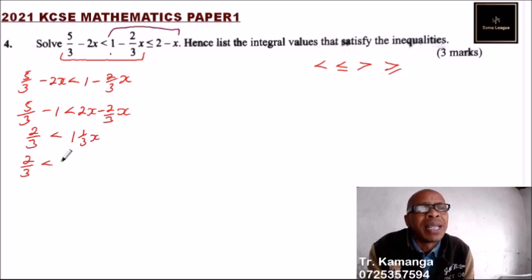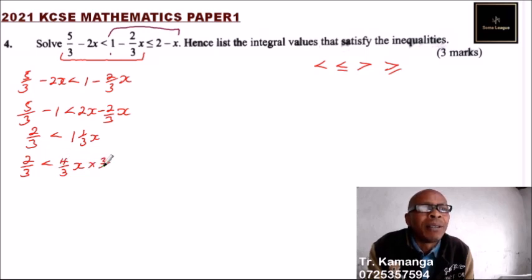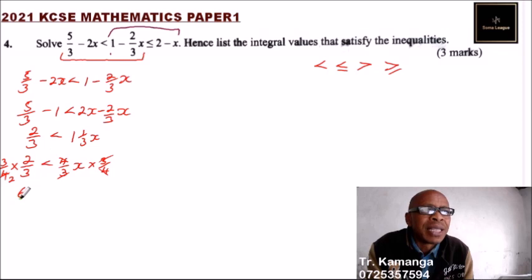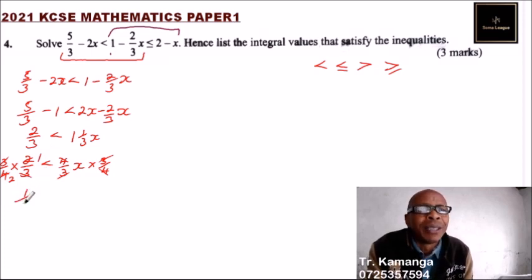We have 2 over 3 less than 4 over 3x. To eliminate the fraction, we multiply both sides by 3 over 4. This cancels the 4 and 3. We get 1 over 2 less than x, so x is greater than one half. We have solved the first part of the inequality.